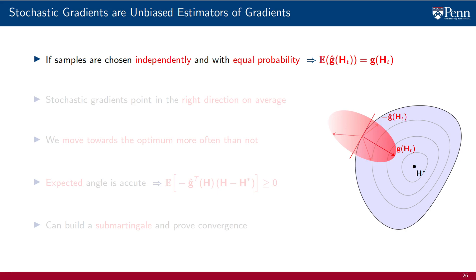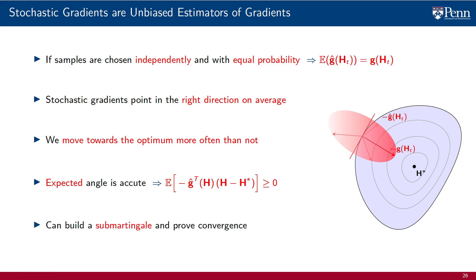This has to be the case for their expectation to be a gradient. We signify this on the figure with the heat map of stochastic gradients having more mass around the gradient than in the opposite direction. Now, if stochastic gradients point in the right direction on average, it means that we move towards the optimum more often than not. If you want to be more formal about it, the expected angle between the stochastic gradient and the arrow with the head at the optimum is acute on expectation. And if you want it to be completely formal, you would use the angle equation to build a submartingale and prove convergence. This is not difficult, but since this is not a class on optimization, I will not bother you with the details.